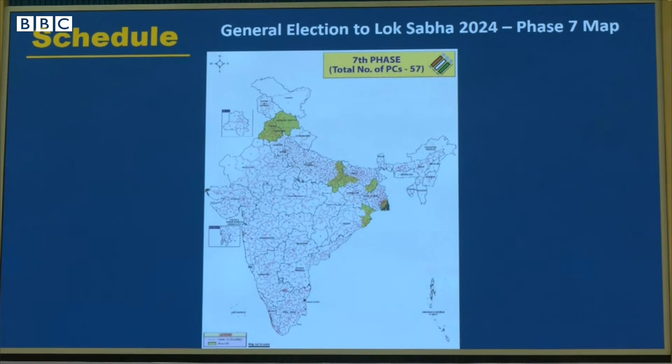Phase 6 will also cover Bihar, Bengal, Odisha, along with some northern portions. Phase 7: notification will be on 7th of May and polling on 1st of June — the last polling day — with counting on 4th of June. This phase will include all of Punjab and Haryana.